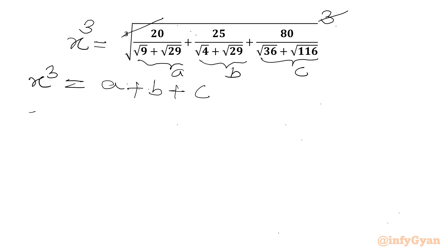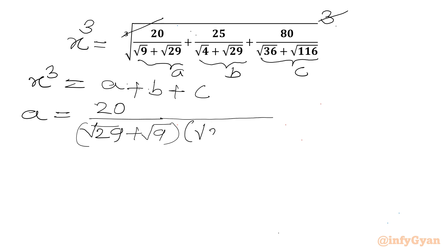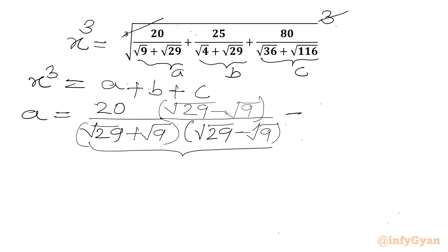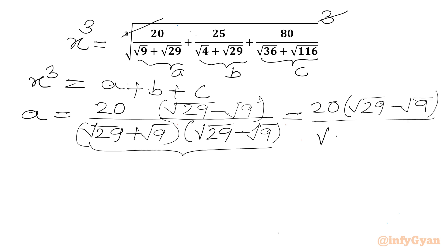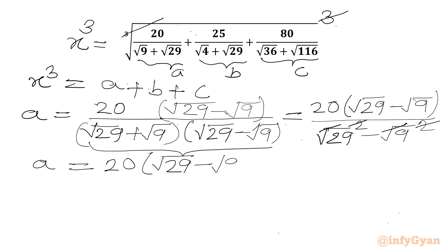Let's simplify separately. I will write a = 20 over (√29 + √9). Now we will rationalize the denominator by multiplying numerator and denominator by (√29 − √9). In the denominator we have (a+b)(a−b) form, so we use the difference of two squares identity. The denominator becomes √29² − √9² = 29 − 9 = 20. So a = 20(√29 − √9)/20 = √29 − √9.